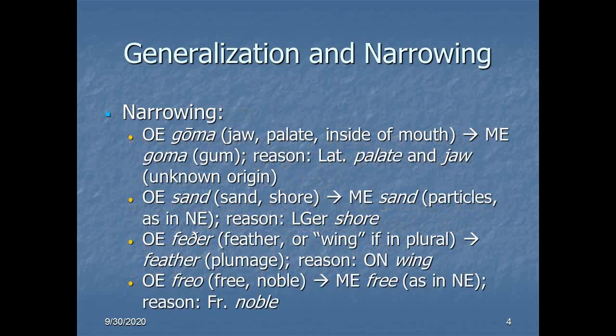With narrowing, on the other hand, we are moving in the exact opposite direction. In Old English, 'goma' meant jaw, palate, the inside of one's mouth, but in Middle English 'goma' simply means gum — as in your gums — that's where we get our word. The reason here is a Latin replacement: Latin 'palate' now refers to the top of the mouth, and 'jaw' of unknown origin refers to the movable bit. This reduction of the semantic field of 'goma' basically leaves a smaller area of applicability for which the word gum is still useful. So basically this is a case of language contact.